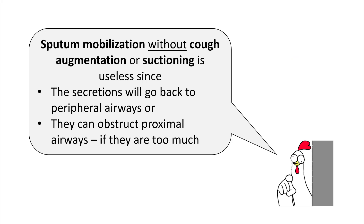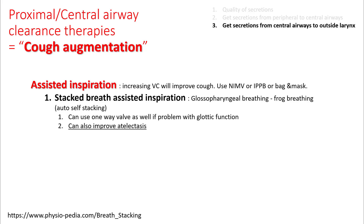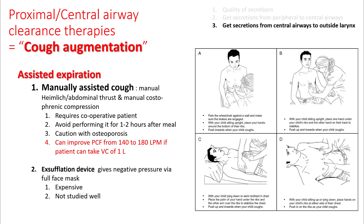Sputum mobilization without cough augmentation or suctioning is useless because secretions which come from peripheral airways will tend to go back in if you don't suction or remove them — or they can obstruct proximal airways if in large quantities. To get a better cough, you need higher tidal volumes, so you can assist inspiration. This is done by stacked breathing using glossopharyngeal muscles. You can assist expiration, which increases expiratory flow rate — this is done by the Heimlich and abdominal thrust movement — improving the peak cough flow.